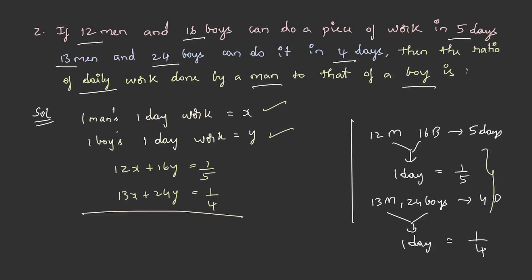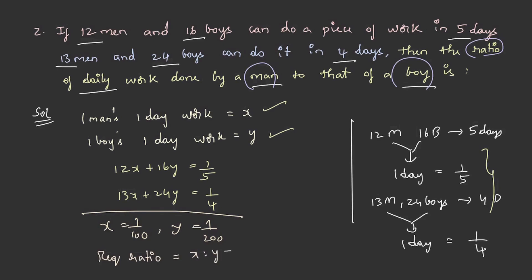On solving these equations, we get x equals 1 by 100 and y equals 1 by 200. He is asking for the ratio of daily work done by a man to that of a boy. Therefore the required ratio is x to y, that is 1 by 100 is to 1 by 200, which becomes 2 is to 1. This is the ratio.